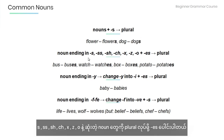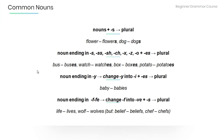Nouns ending in S, SS, SH, CH, X, Z, or O — we add ES to make a plural. For example: bus → buses, watch → watches, box → boxes, potato → potatoes.